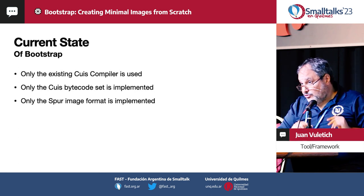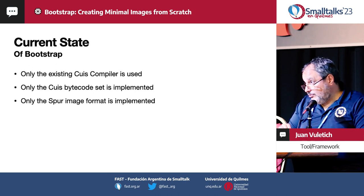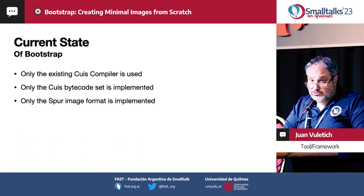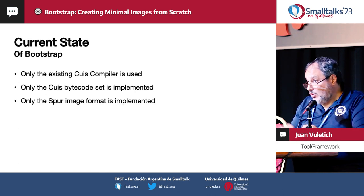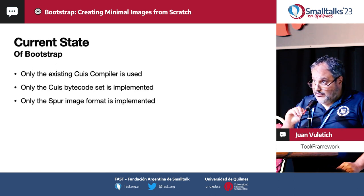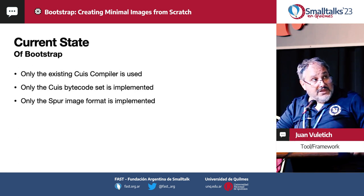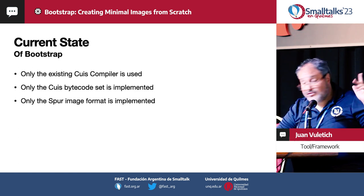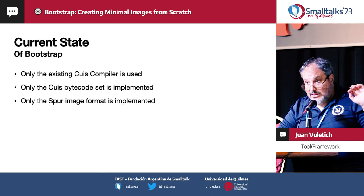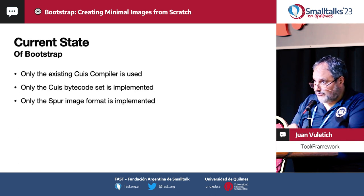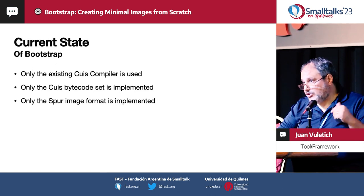This is the current state of the bootstrap framework. The framework is designed with all those ideas and is, hopefully, easy to extend. But so far, we are only using the existing Quiz compiler. That means that right now we cannot change language semantics — we need a compiler that generates different formats of compiled methods or enough information to materialize compiled methods. Right now we are using the Quiz compiler and the Quiz bytecode set. And right now we only have builders for the Spur image formats. But the knowledge of the Spur image format is well-organized, so it is mostly a matter of adding a new builder for a new image format to support additional image formats. The framework is designed for that.